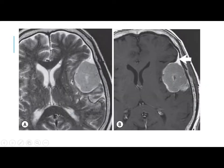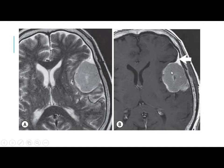On axial T2, there is a well-defined mass iso-intense to gray matter with a dural base, causing indentation of the cerebral convexity. On T1 with contrast, we can see the dural enhancement with the enhancing dural tail.